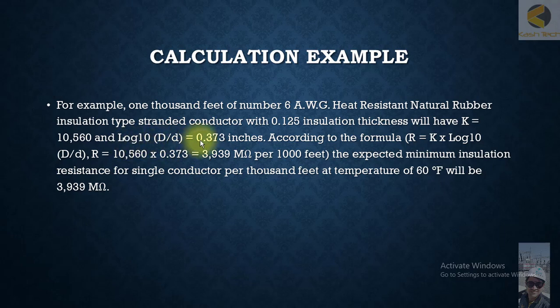And log of 10 (D/d) will be equal to 0.373 inches. According to formula R equals K times log of 10 (D/d), where R equals 10,560 times 0.373, that is equal to 3,939 megaohms per 1000 feet.